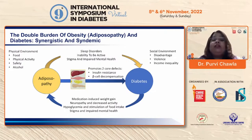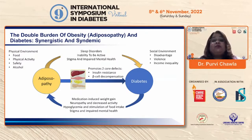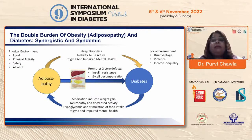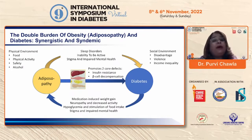The storm is coming fast. Obesity was perhaps not well acknowledged as a pathophysiological condition, but adiposopathy clearly tells us it is a pathological condition related to adipose tissue. In the background of adverse physical environments and increasingly acknowledged social factors like disadvantage, violence, or income inequality, these two epidemics are literally thriving and feeding into each other.